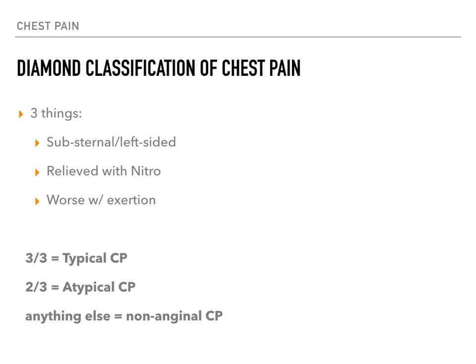Let's say a patient has all three features: substernal chest pain, it's worse with exertion, and it's relieved with nitroglycerin. Does that sound more like an MI or more like angina? Well, it sounds like angina. So the takeaway is: if you have three out of three, you're more likely to have angina. But as you approach zero out of three, it's more likely that it's non-anginal and that it's an MI.